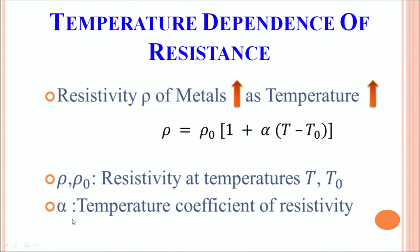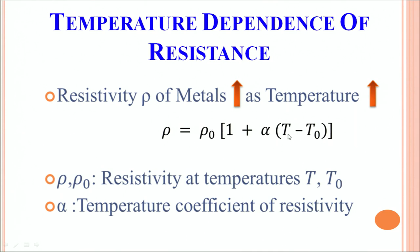So, what is α? α is the temperature coefficient of resistivity. For metals, α is a positive number and therefore, as T increases, you know, because α is positive, then ρ is bound to increase.